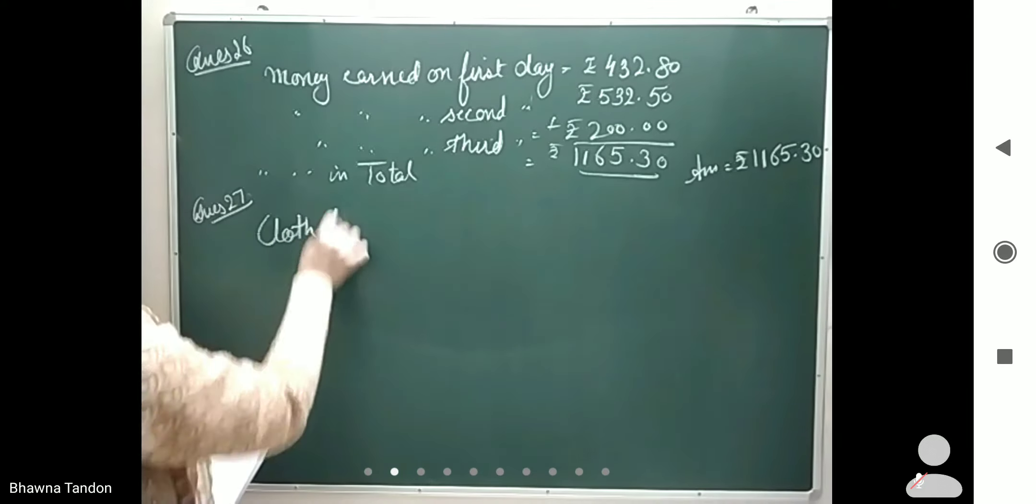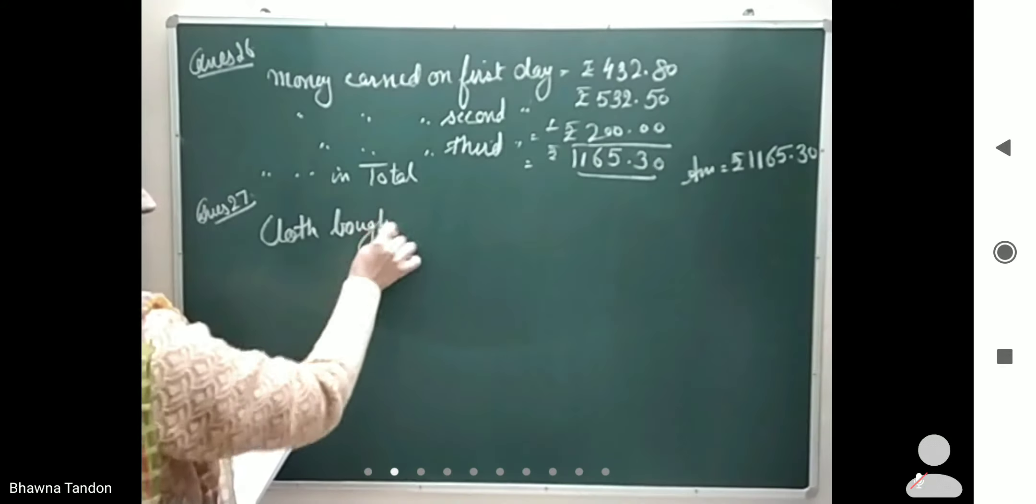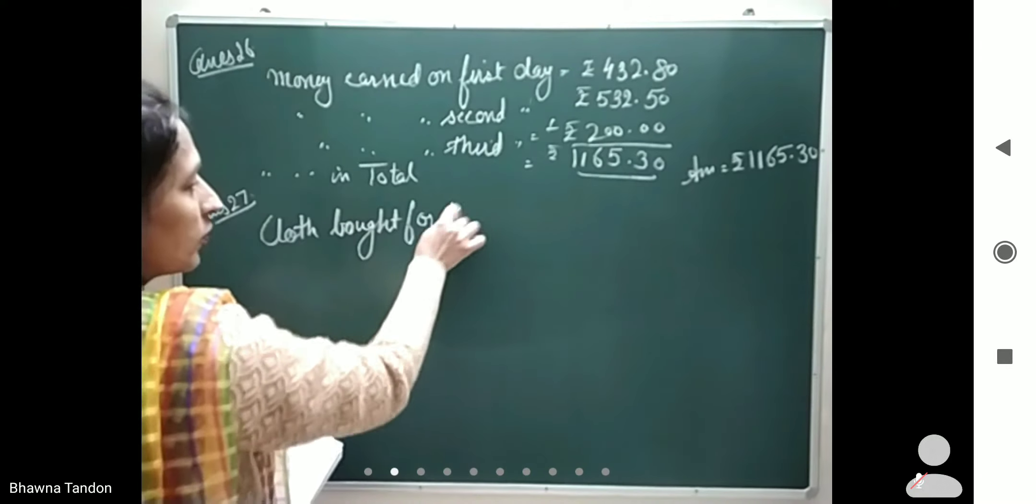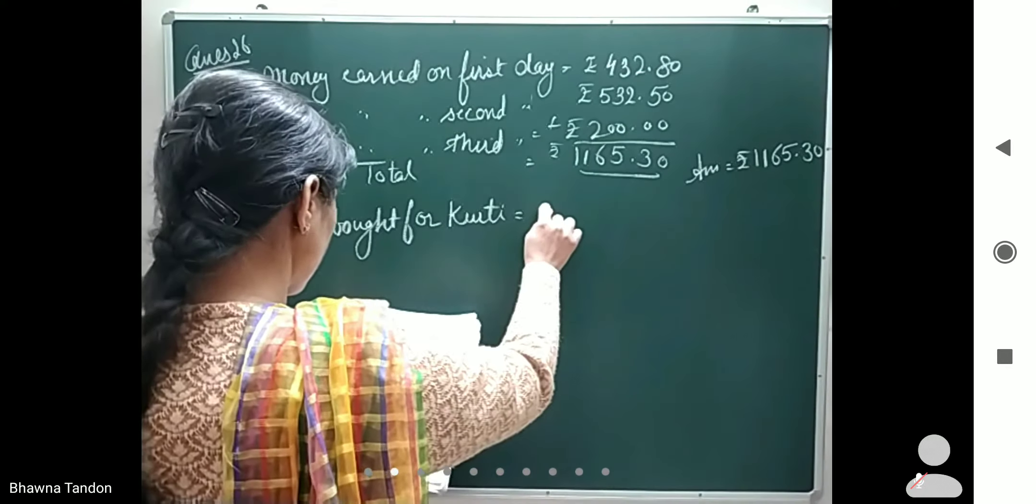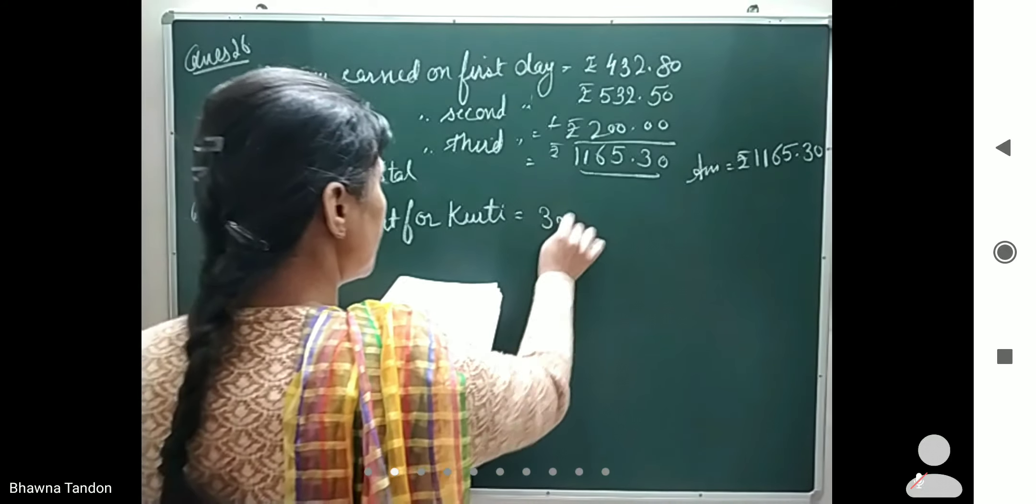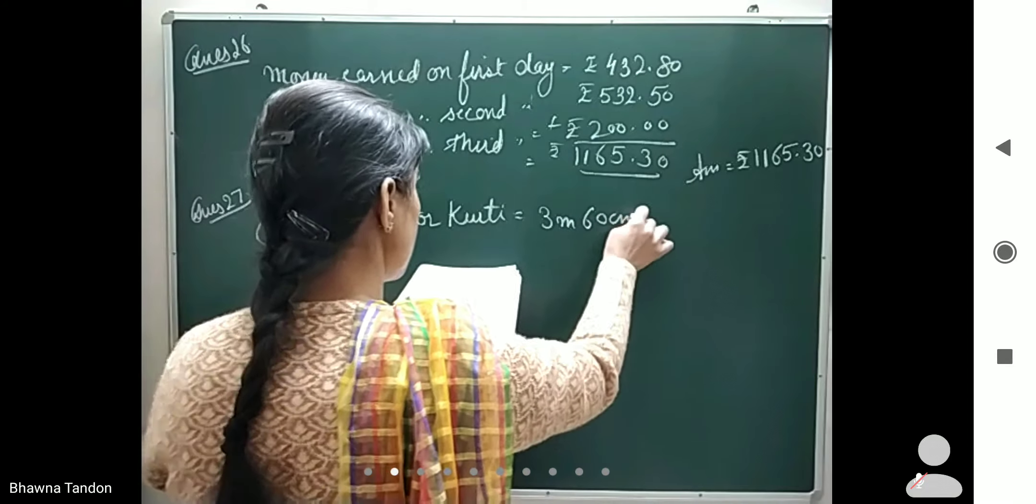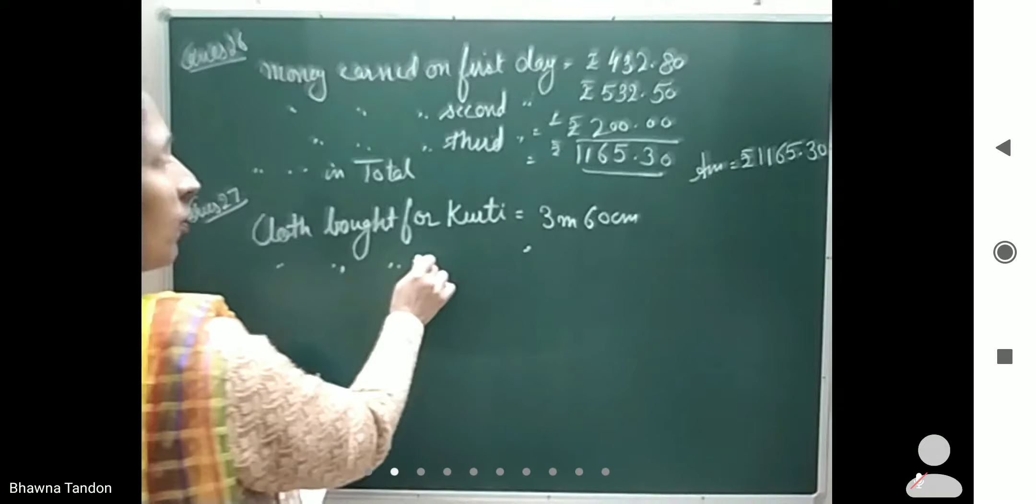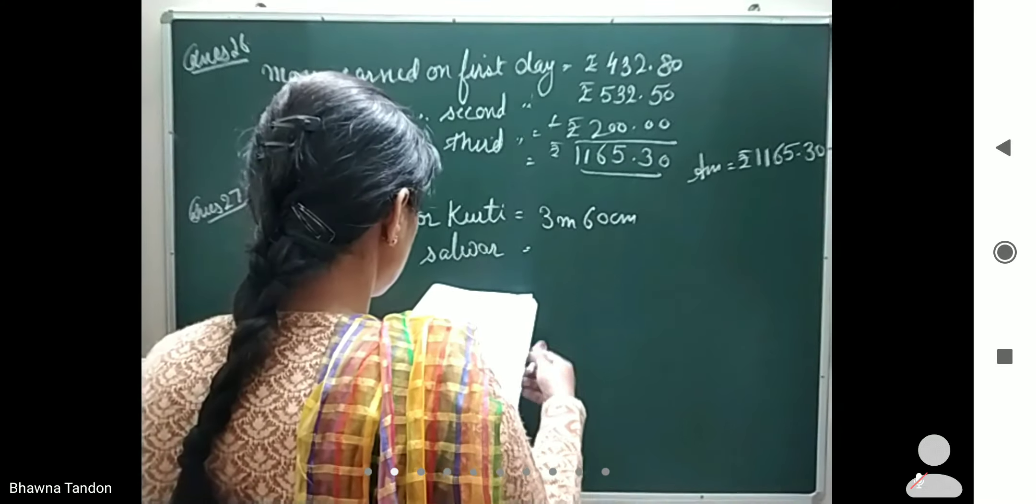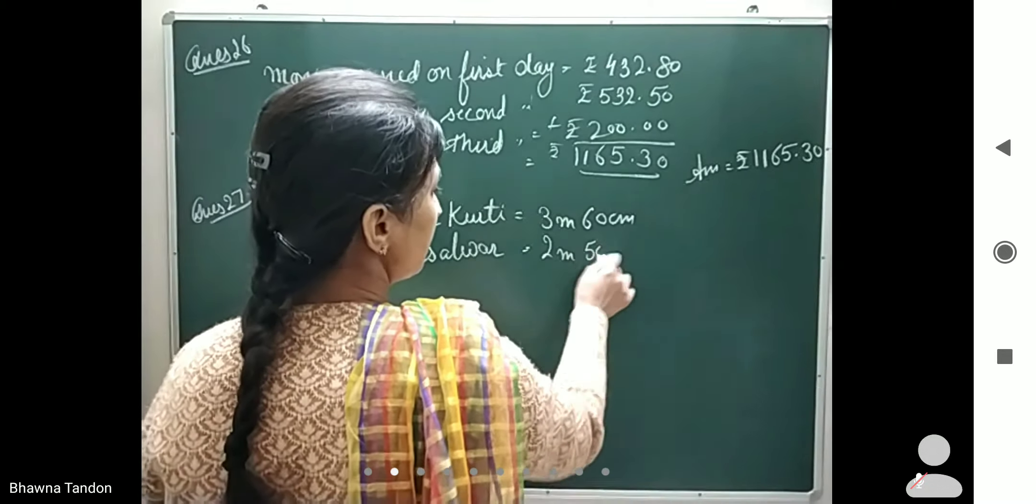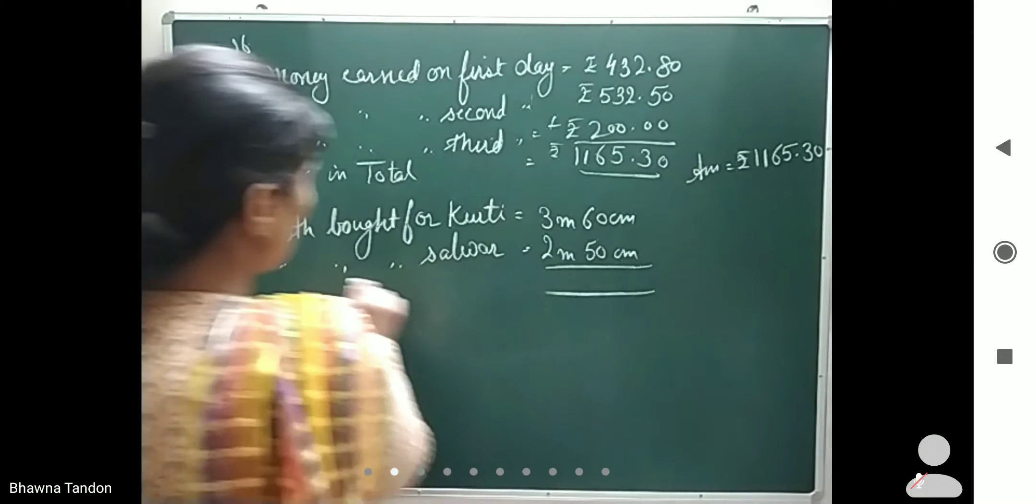Cloth bought for kurti is 3 meters 60 centimeters. Cloth bought for salwar is 2 meters 50 centimeters. Now total...